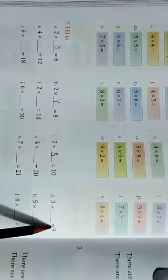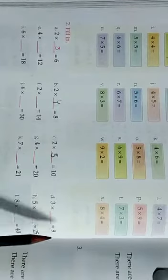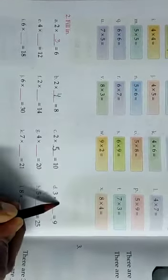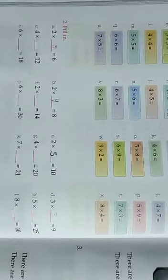3 times of dash equal to 9. 3×1 is 3, 3×2 is 6, 3×3 is 9. Is it okay children? So in this way you are just going to fill this.